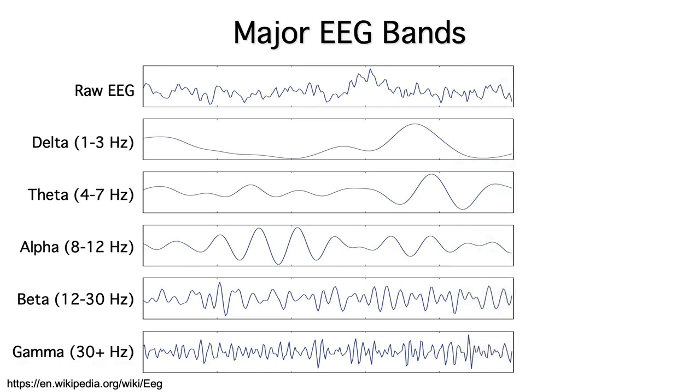I'd like to caution you that this is just a coarse way of subdividing the EEG. You don't want to assume that the theta band activity you see in one experimental paradigm represents the same underlying neurocognitive processes as the theta band activity you see in a very different paradigm.